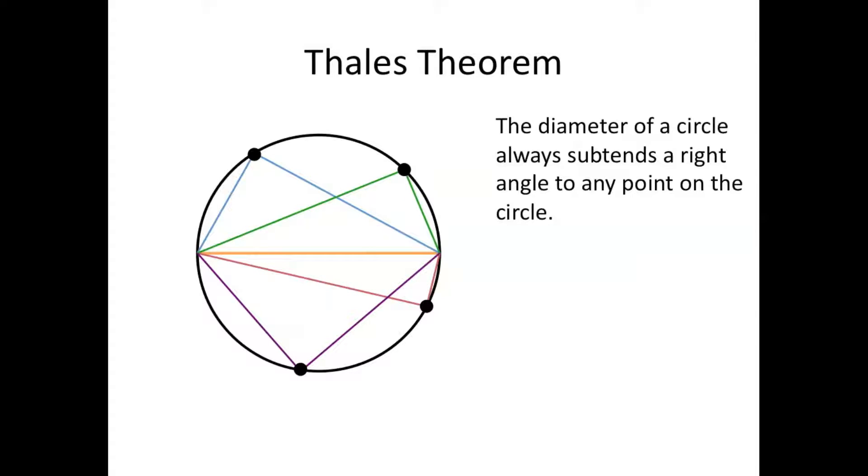And as you can see, all these four angles were drawn from the end points of the diameter but they touch four different points along the circumference of the circle, and according to Thales Theorem, regardless of the fact that each of these are touching different points on the circle, all of them form a right angle.